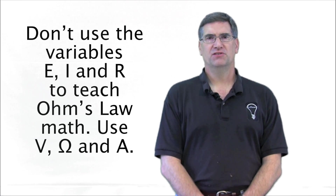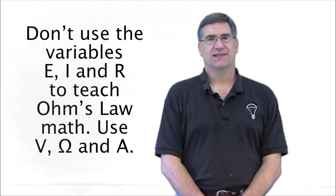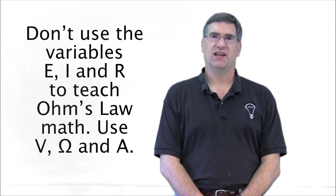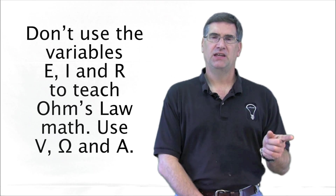There are a couple of reasons why I think EINR is a mistake. First of all, it's not what's on the meter. The meter has volts, ohms, and amps — the V, the Omega, and the A.